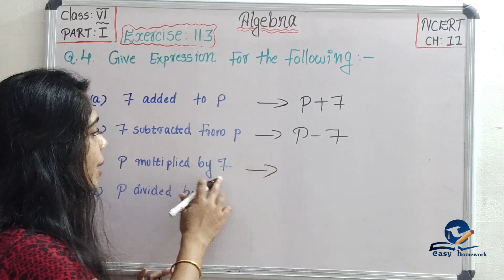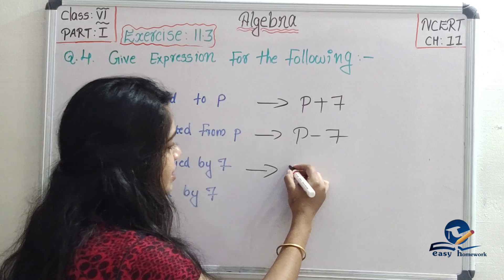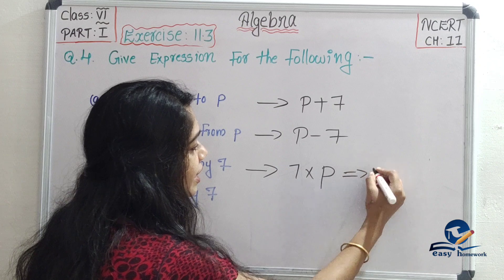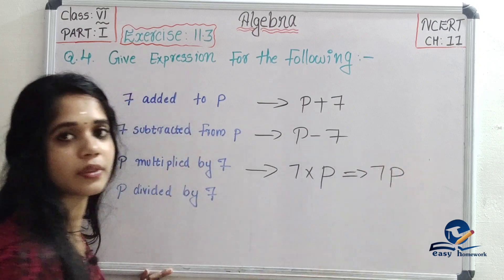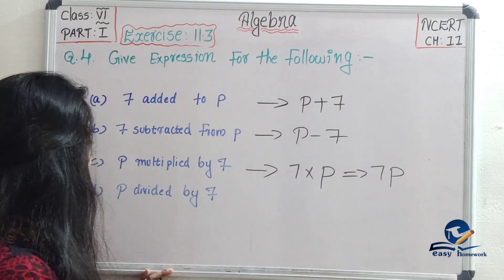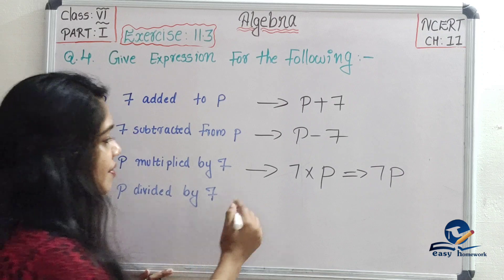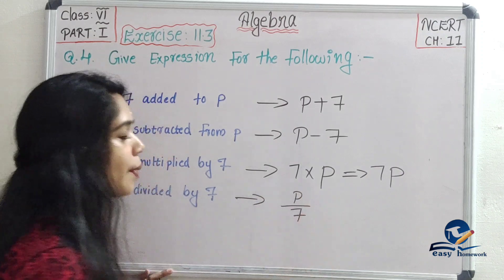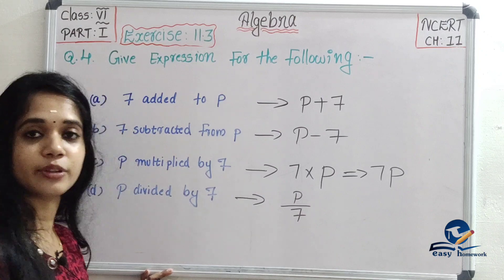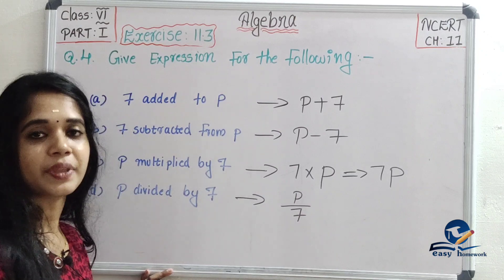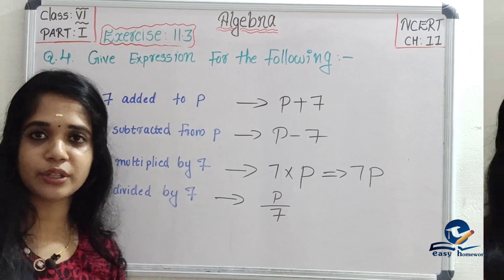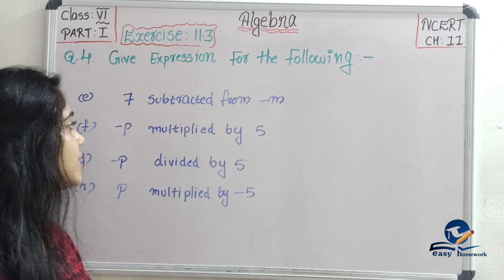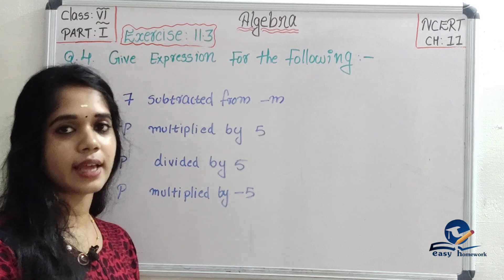The next expression is p multiplied by 7, giving 7p. The next question is 7 subtracted from minus m.